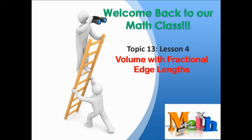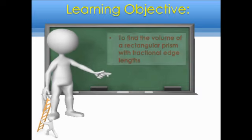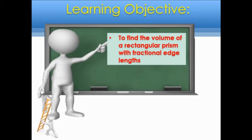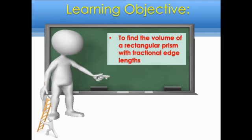It's about volume with fractional edge lengths. This lesson can be found in your textbook on pages 725 to 730. The objective of today's lesson is to find the volume of a rectangular prism with fractional edge lengths.